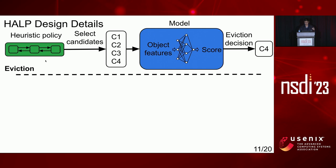The reason we directly rank objects instead of predicting their time-to-next-access is because ranking is closer to the end objective, which is to find the right object to evict. The deselected candidates are reinserted into the heuristic policy — in the case of LRU, the three deselected candidates are reinserted into the head of LRU.